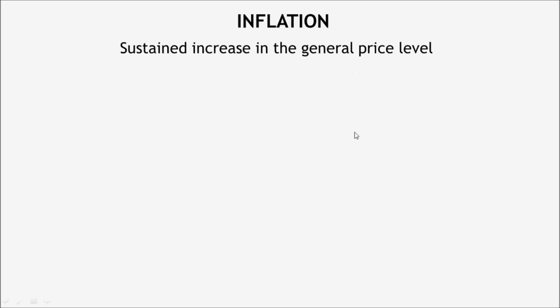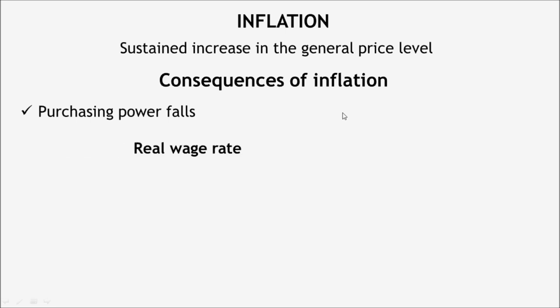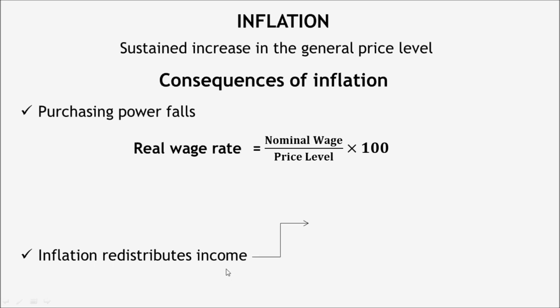Let us check the consequences of inflation. When there is inflation, the purchasing power of wages — what we call real wage rate — falls, due to which it becomes difficult for people to maintain their standard of living. Real wage rate can be measured by dividing the nominal wage by the general price level of an economy, multiplied by 100 to express it in percent. Sometimes wages rise faster than prices and sometimes prices rise faster than wages. If wages rise faster than prices, inflation is not a problem as people can maintain even a better living standard. But when prices rise faster than wages, inflation is miserable. Moreover, inflation can redistribute income: fixed income earners lose their income in real terms during inflation, while borrowers gain.